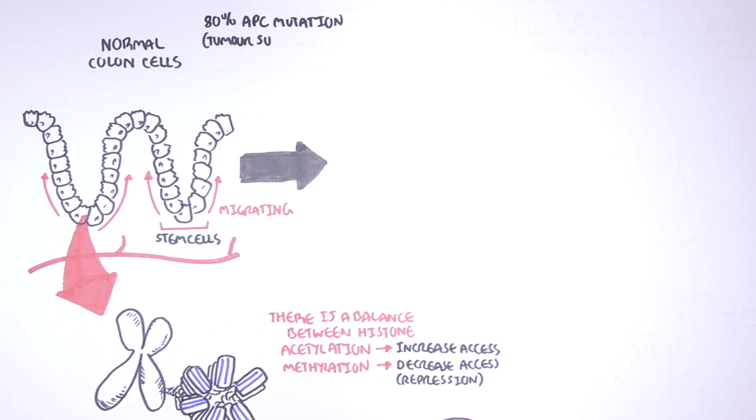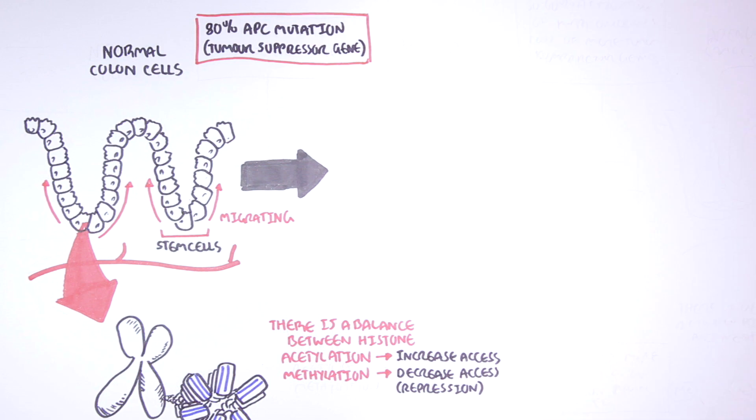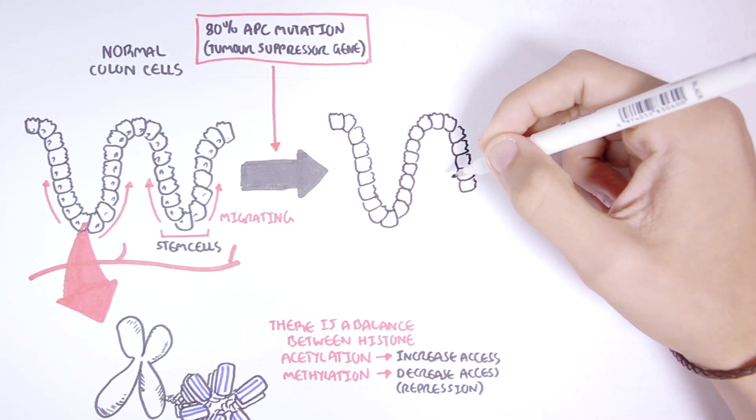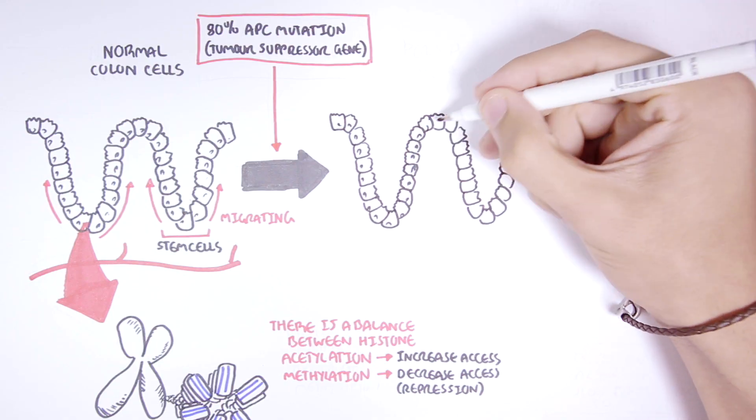Now in 80 percent of cases of colon carcinogenesis, there is an adenomatous polyposis coli gene mutation, or APC gene mutation. The APC gene is essentially a tumor suppressor gene because normally it encodes for proteins involved in cell adhesion and transcription. This APC gene mutation can result in one of these stem cells becoming potentially cancerous.